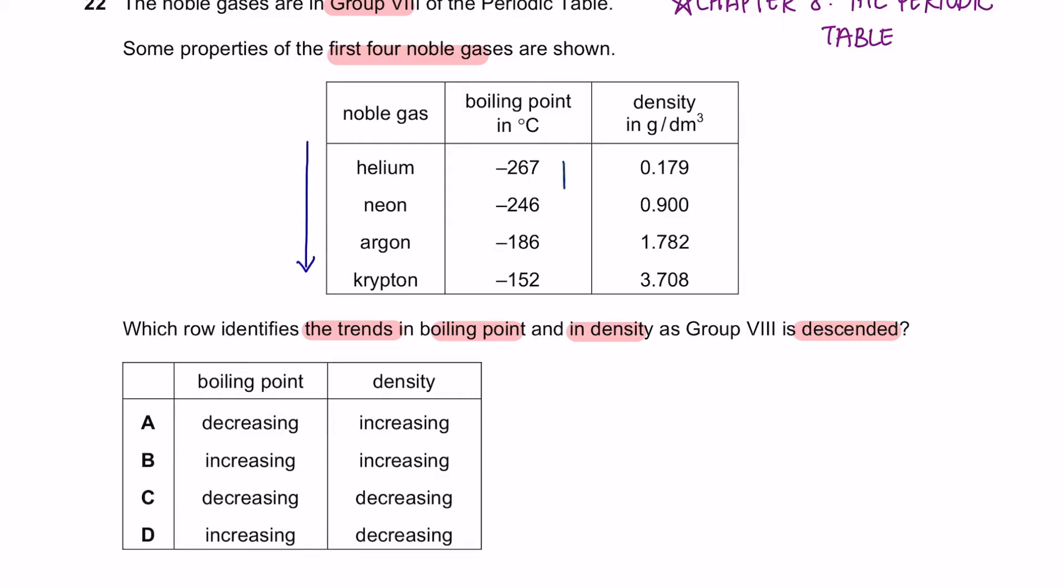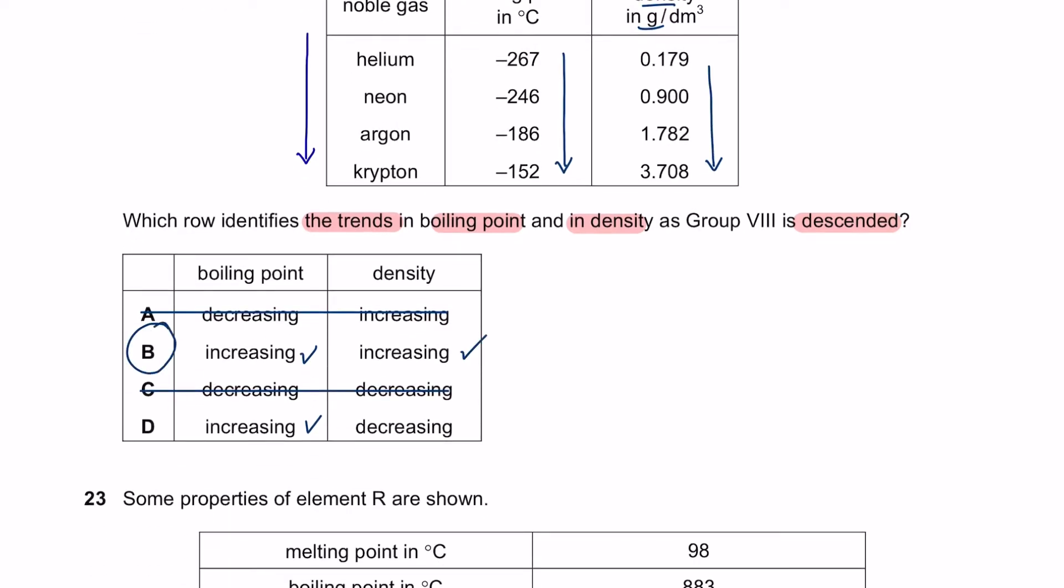As we move down group 8, we can see that the boiling point is increasing and the density is getting bigger, that means it's also increasing. So the answer is B.